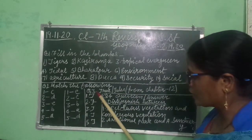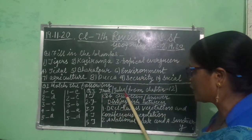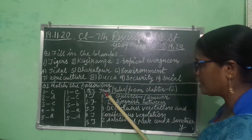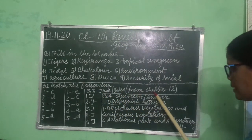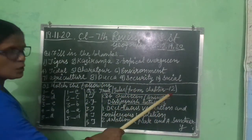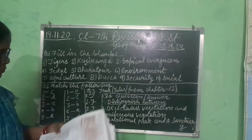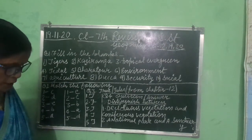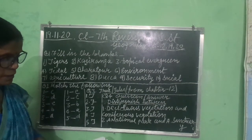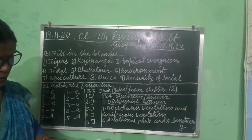Now, chapters 19 and 20 do not have true and false. True and false is from chapter 12. We have written true and false from chapter 12, okay? Don't forget it. So let's see true and false from chapter 12.